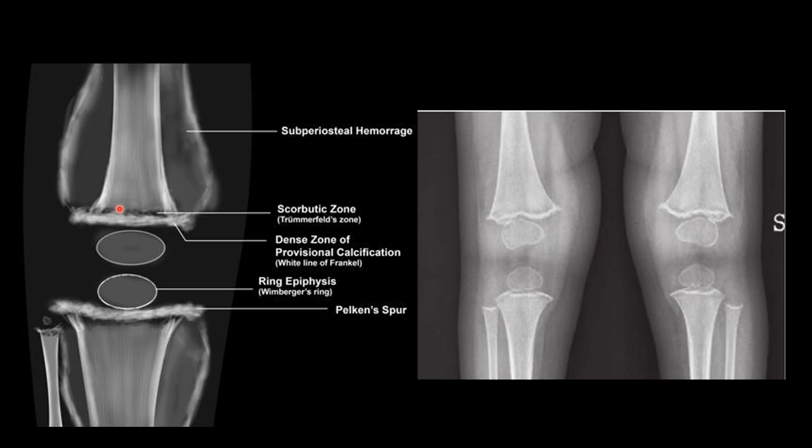The white line of Frankel is a dense zone of provisional calcification. Just adjacent to it, towards the shaft, we see a lucent or black line which is called the scorbitic zone or the Trümmerfeld zone. This white line extends to the corner, and then it is called the pelican spur at the metaphysis. These are all metaphysis findings.